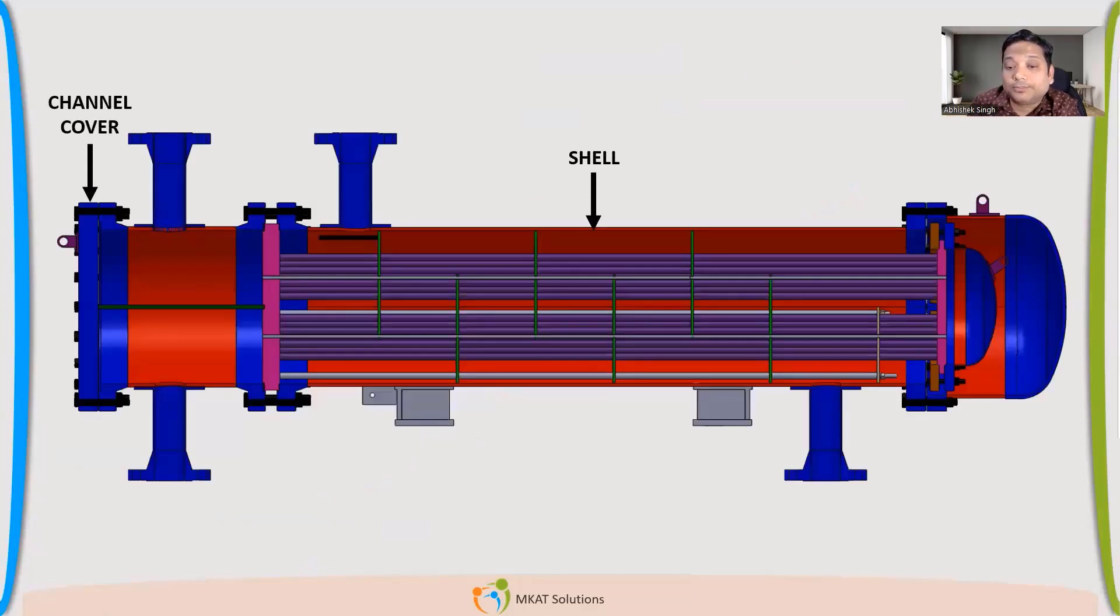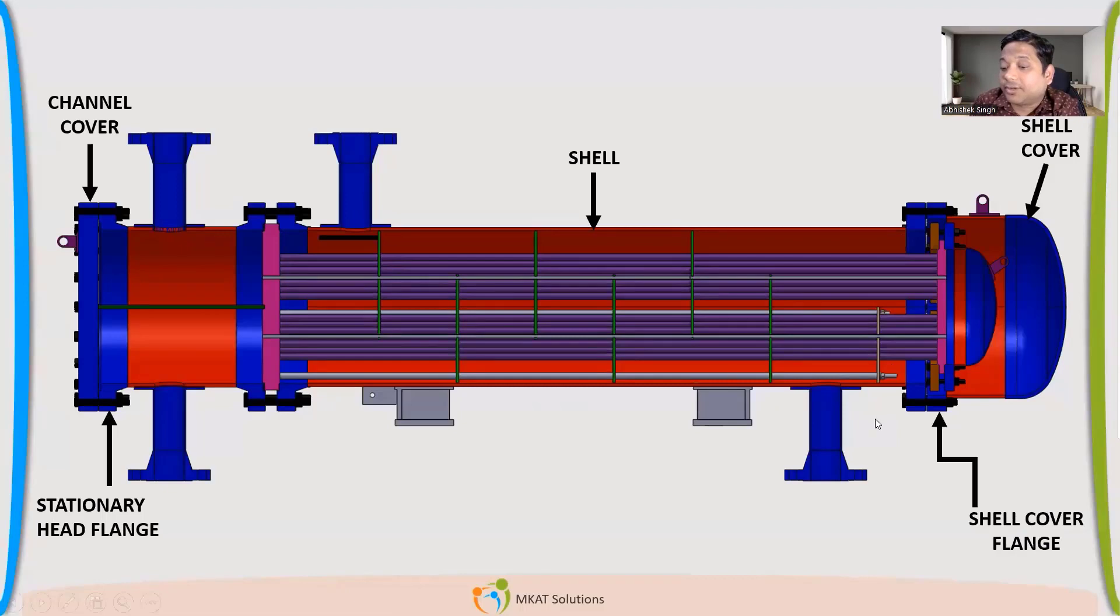So this is a floating type. Here you have to know about the different parts because that becomes really confusing. So this is shell cover. Stationary head flange. Then there is shell cover flange. This is the shell cover. And this is the shell cover flange. Stationary head channel flange. Because there will be a floating side, which is the other side.